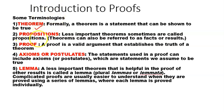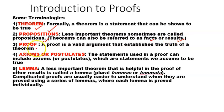Sometimes we also use the term propositions, and this term has a different context here. We have already come across proposition in logic. Less important theorems are sometimes called propositions. Theorems can also be referred to as facts or results. A proof is a valid argument that establishes the truth of a theorem, and the important thing is that the argument should be valid.